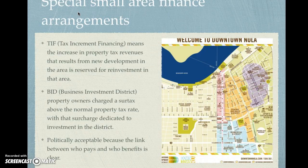There are also special smaller areas with finance arrangements. A common one is a TIF — tax increment financing. This means that the increase in property tax revenues resulting from new development in the area is reserved for reinvestment in that area. If a firm locates there, they pay property taxes on that property, and that's where the city gets money. But instead of that tax revenue going into a general fund, it is reserved for reinvestment in that specific area.